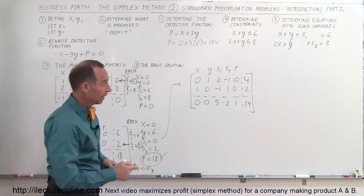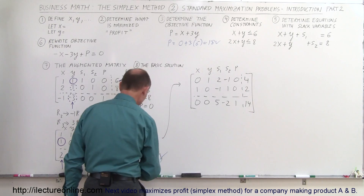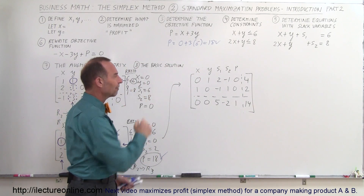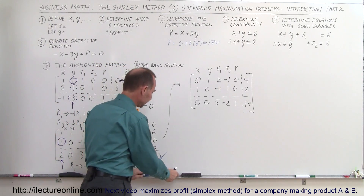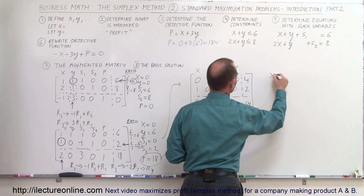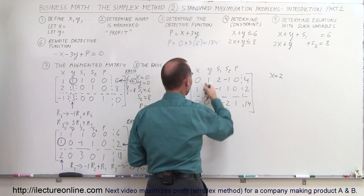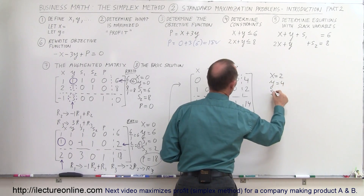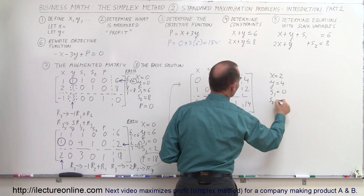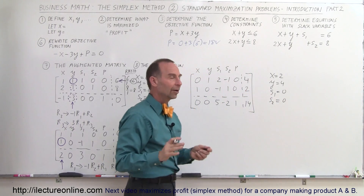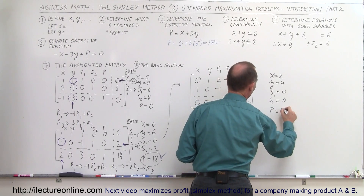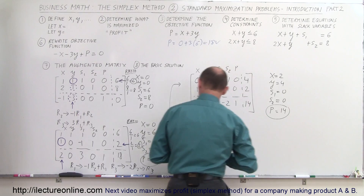Notice what happened: the profit number went from 18 down to 14. But now we do have values for both x and y. Reading the solution: x equals 2, y equals 4, S1 equals 0, S2 equals 0 — no slack, meaning full production. The profit is now 14, which is not the maximum profit.